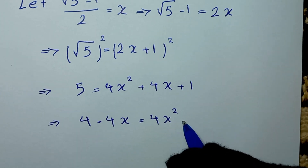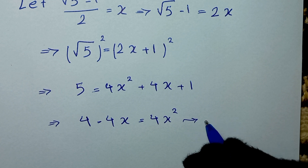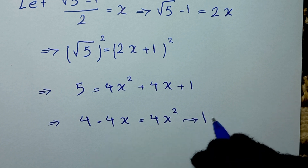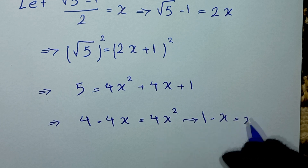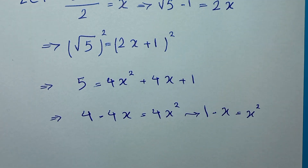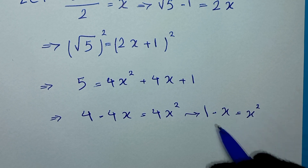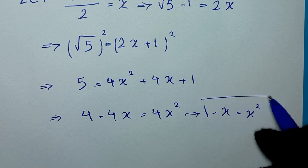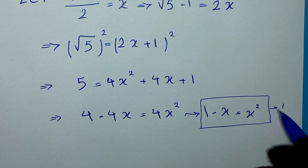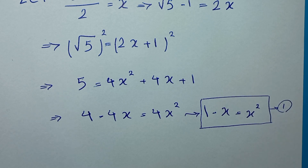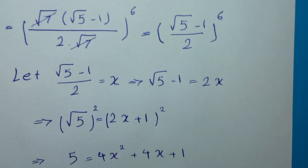We divide both sides of this equation by 4, so this divided by 4 gives 1, this divided by 4 gives negative x, and this divided by 4 gives x². So we have x² equals 1 minus x. We let this be equation 1.